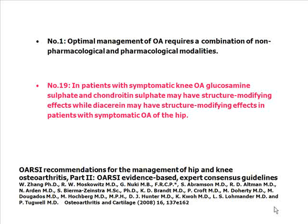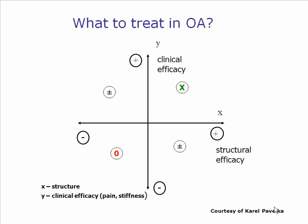Evidence will be shown for these recommendations. In osteoarthritis, the best scenario would be a combination of both clinical and structural efficacy. The current situation is that we sometimes have structural efficacy without clinical efficacy, or clinical efficacy — as with NSAIDs — without structural efficacy.